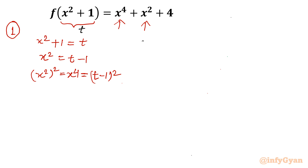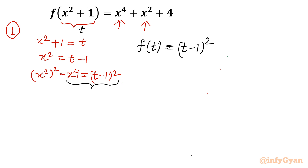Now I will substitute both values — x² and x⁴ — into the right hand side. On the left hand side I will write f(t), and on the right hand side: x⁴ becomes (t − 1)², x² becomes t − 1, plus 4. So we only have to expand it, and then we can write our f(x) by changing the variable.